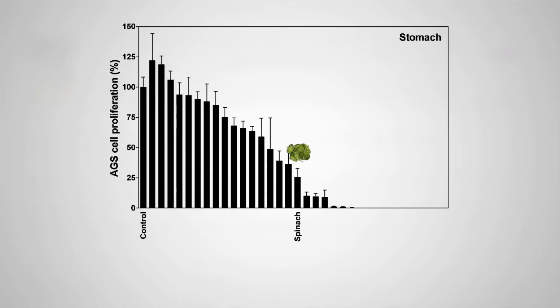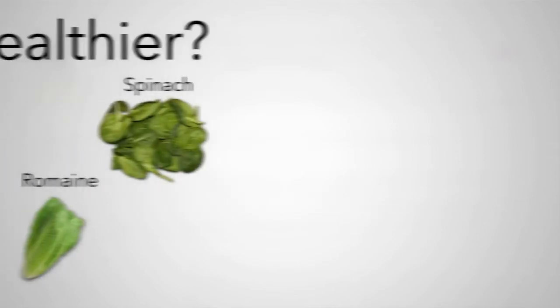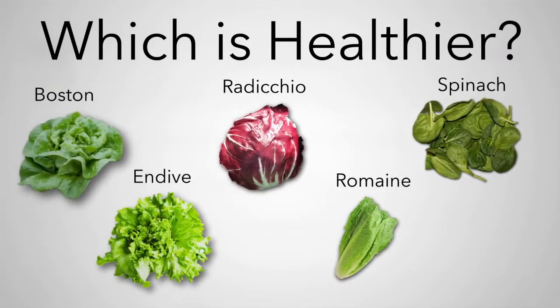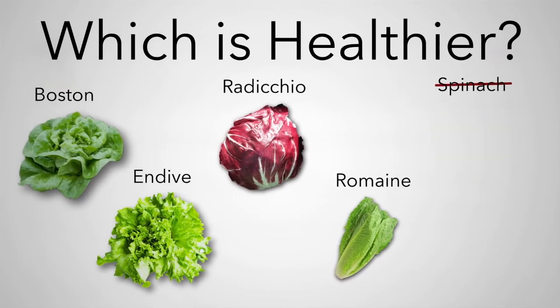Number 3: Marrow — pumpkin, cucumber, and zucchini. Number 4: Root — potato, sweet potato, and yam. Number 5: Edible plant stem — celery and asparagus. Number 6: Allium — onion, garlic, and shallots.